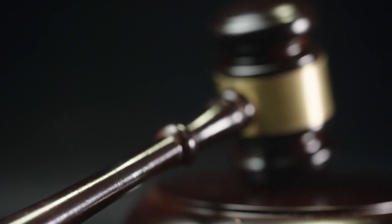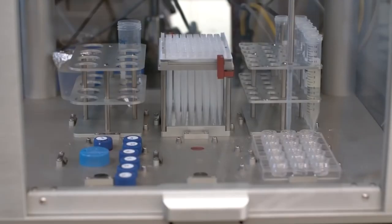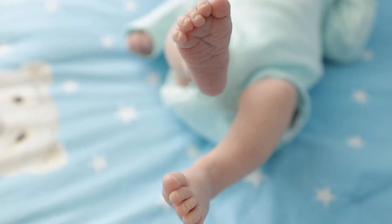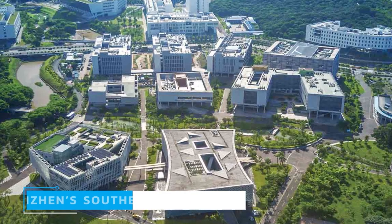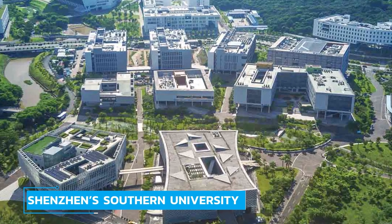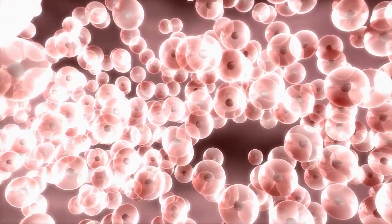He Jiankui, a Chinese scientist, was sentenced to three years in prison in 2019 after declaring that he had used the gene editing technique CRISPR-Cas9 to modify the DNA of twin girls before birth, making them resistant to HIV. At the time, he was an associate professor at Shenzhen's Southern University of Science and Technology, and he declared that he was proud of the accomplishment.